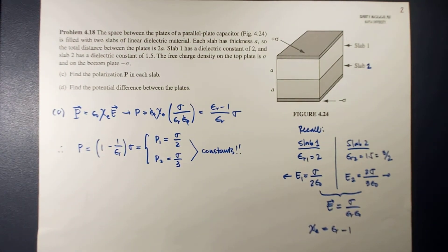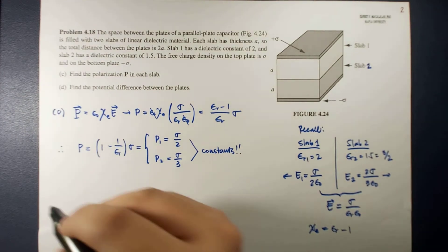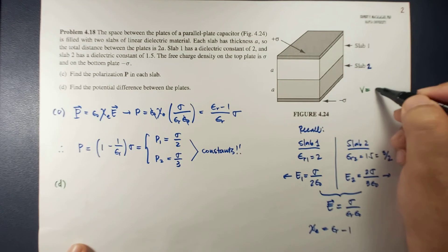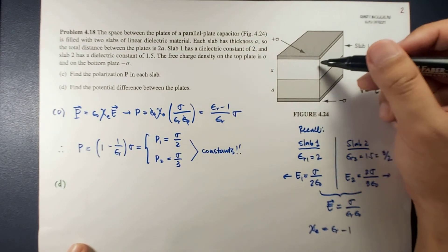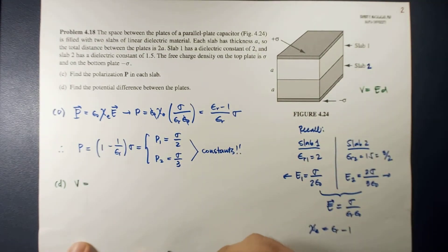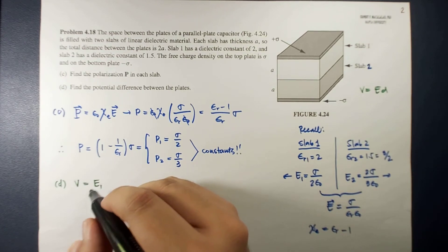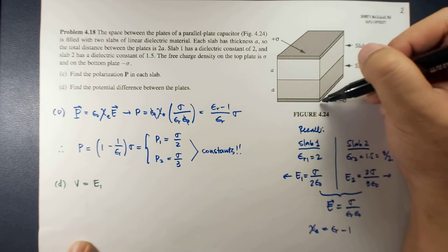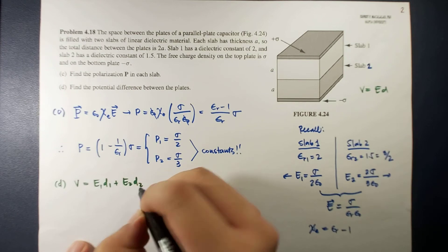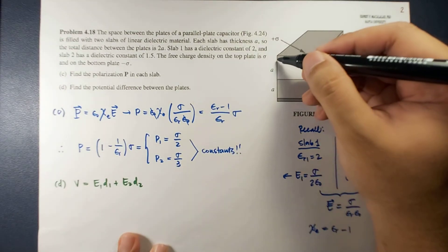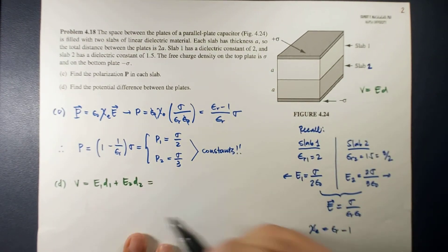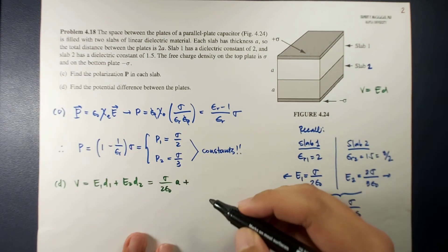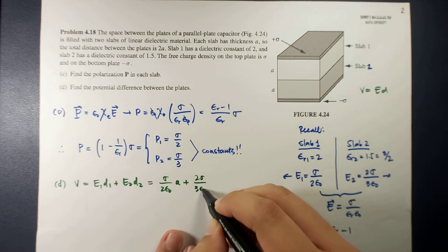Now for letter D, we want to find the potential difference between the plates. Because this is a parallel plate setup, the potential equals E times thickness. Since we have two regions with different electric fields, the total potential difference equals E1·D1 plus E2·D2. Since D1 and D2 are the same and equal to A, this becomes E1·A plus E2·A.